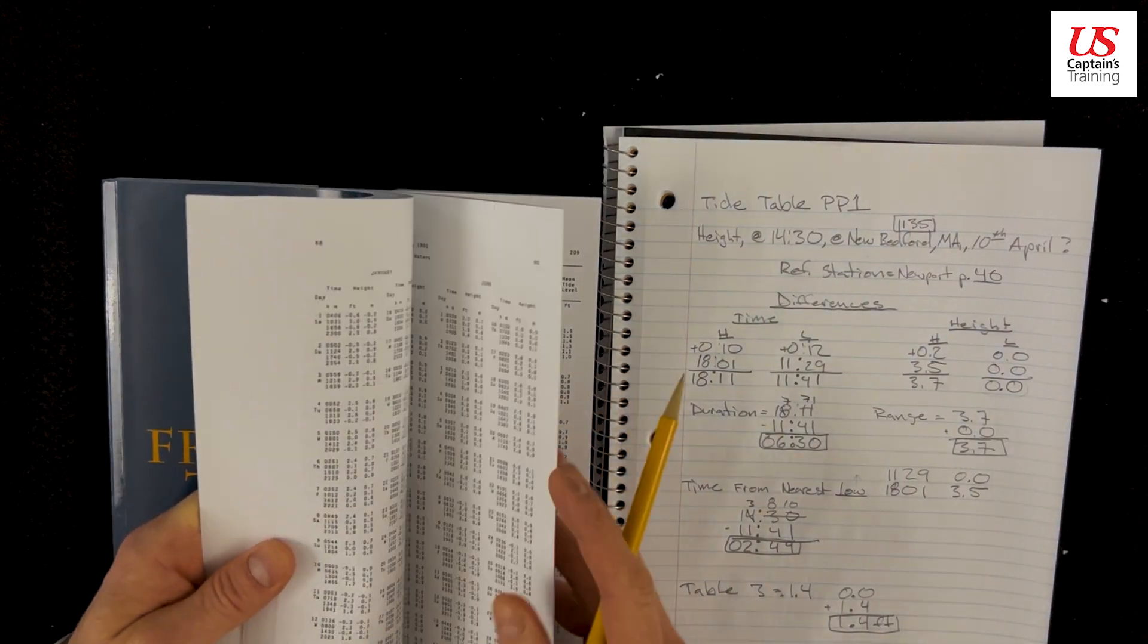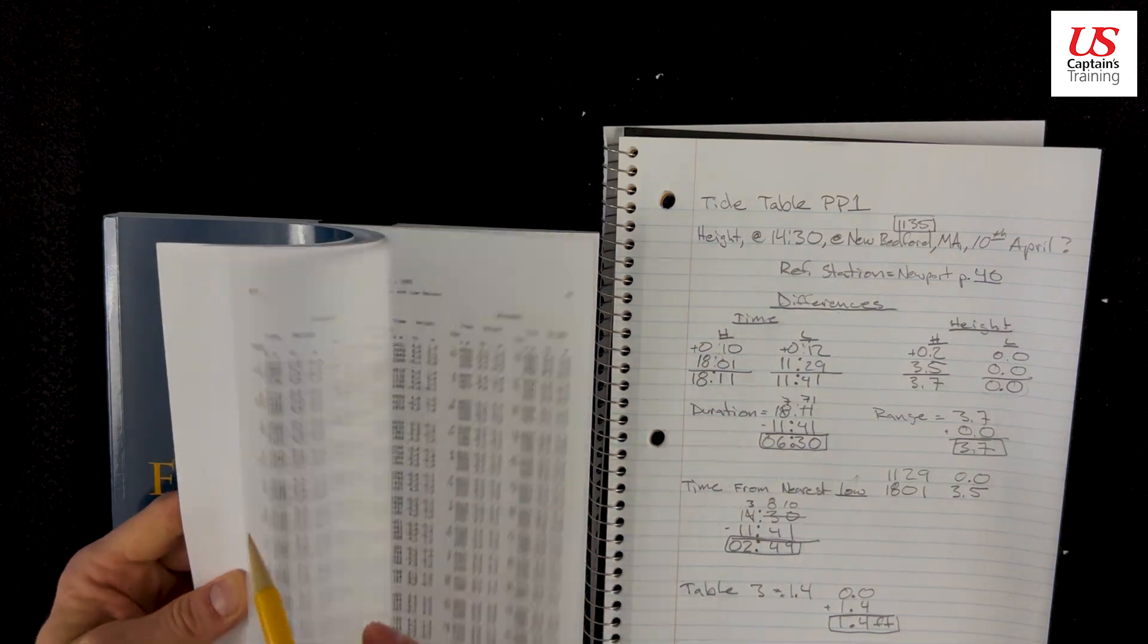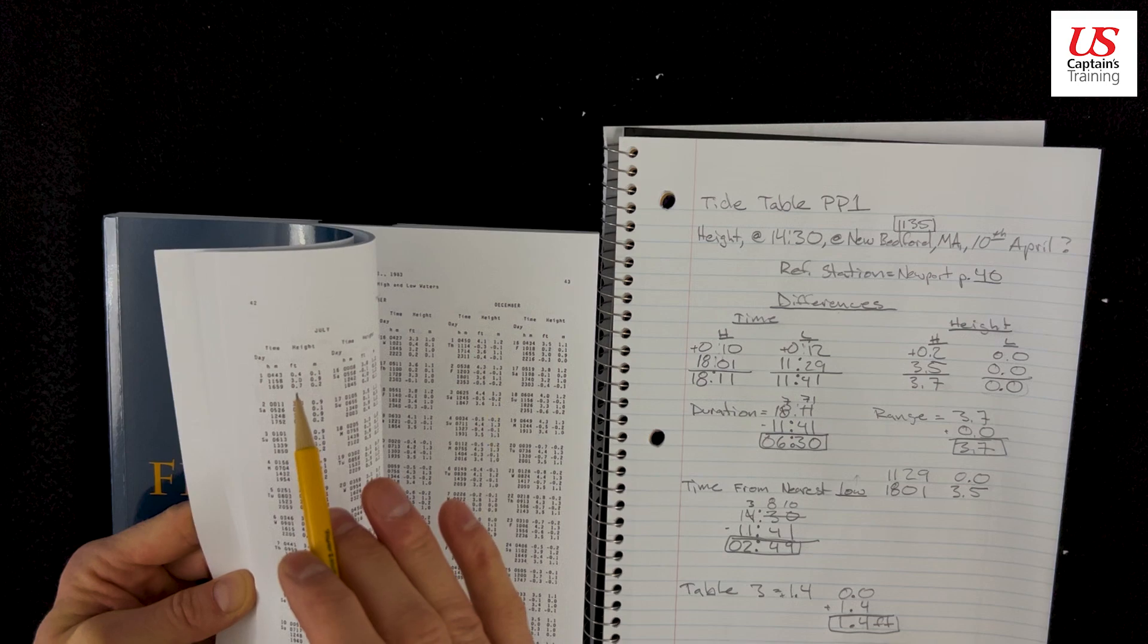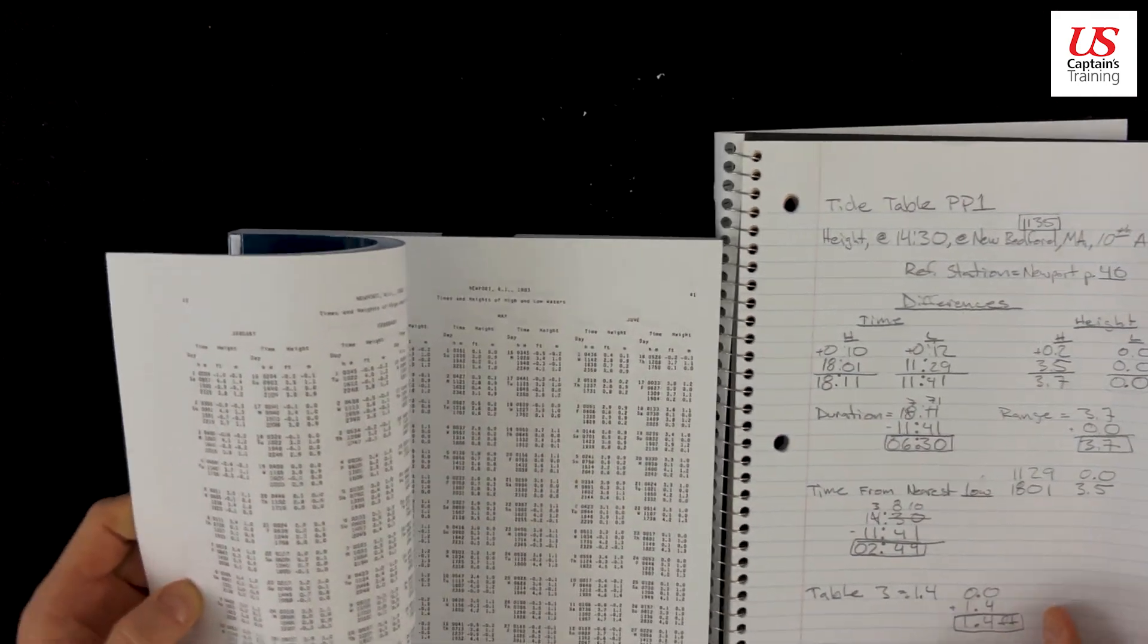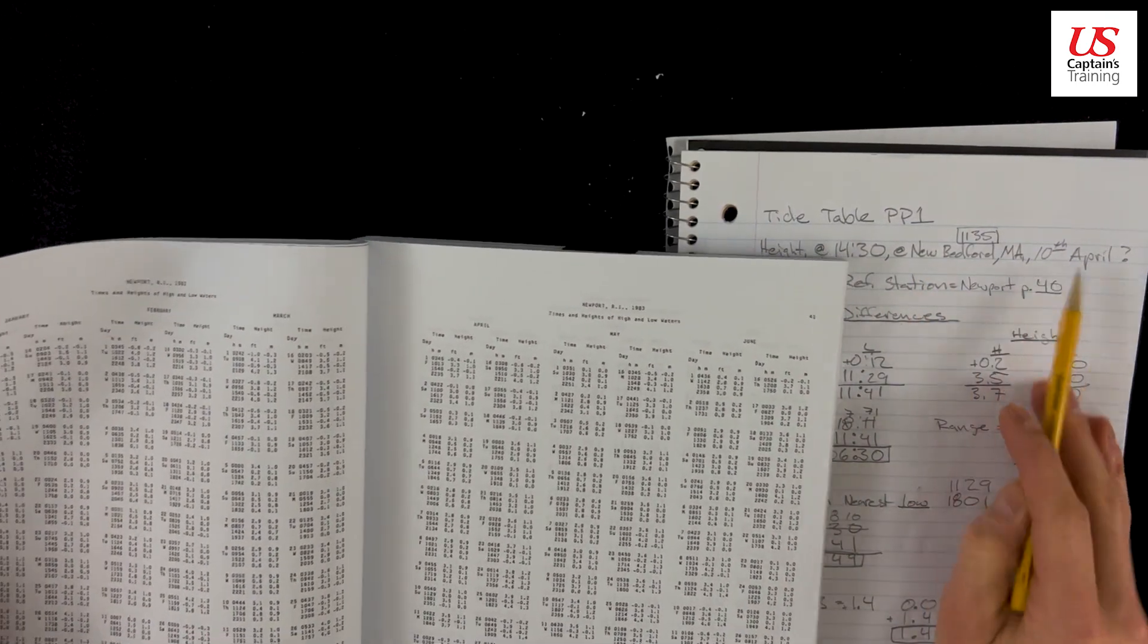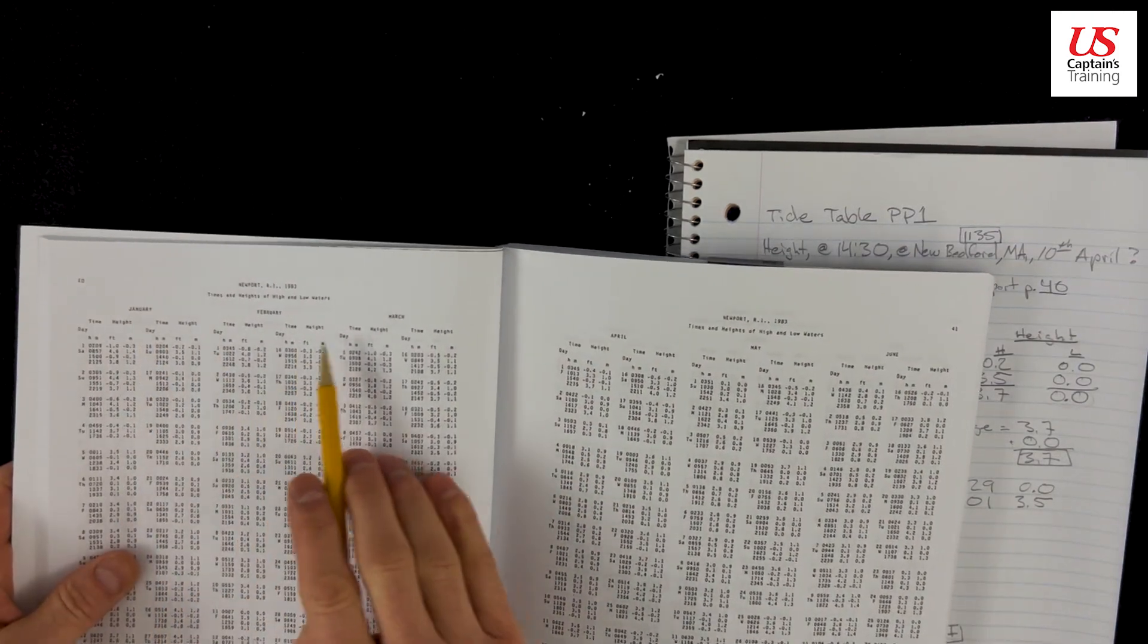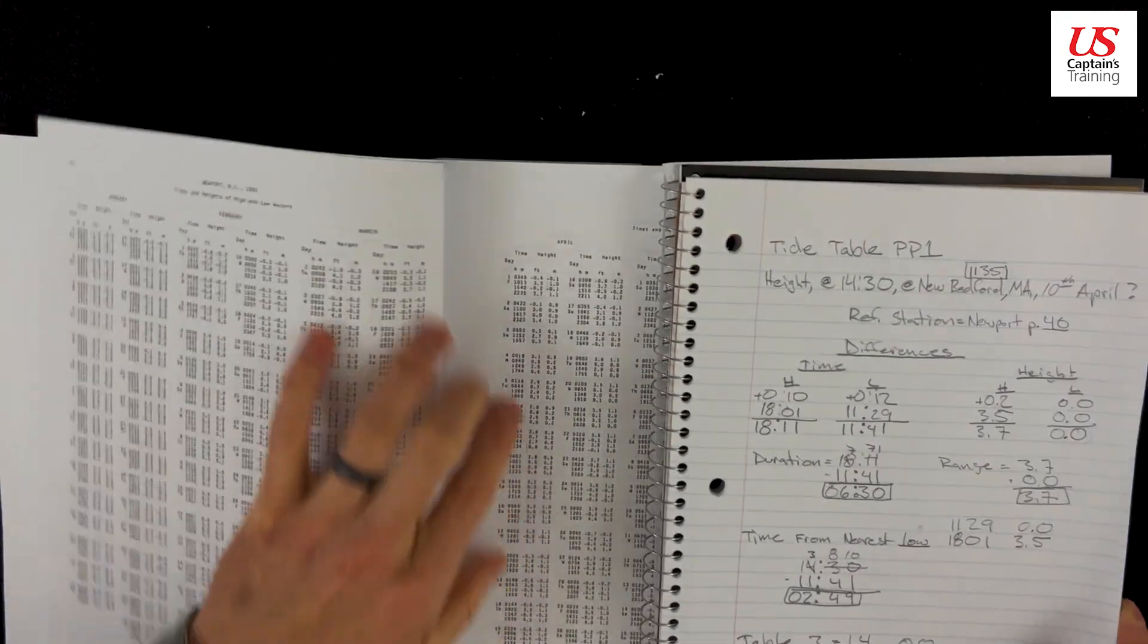So here's the page numbers, and it's an excerpt so it jumps around. So we go to 40, good. 40, and this starts Newport. So we're on, or yeah, Newport, and we're on what day? The 10th of April. So you look up here, it's January, February, March, April. So now we are here in April.